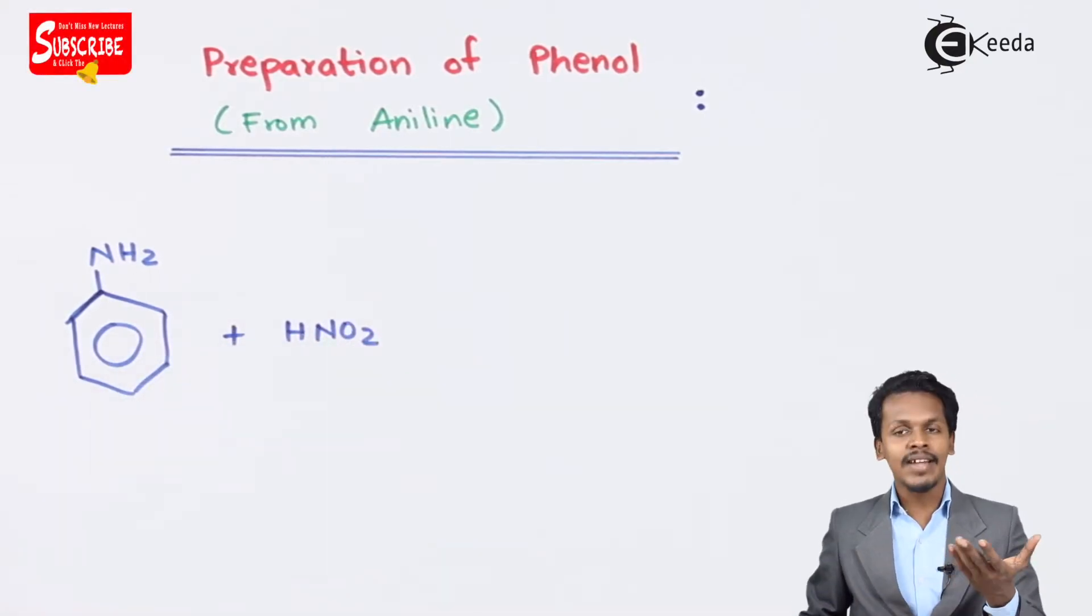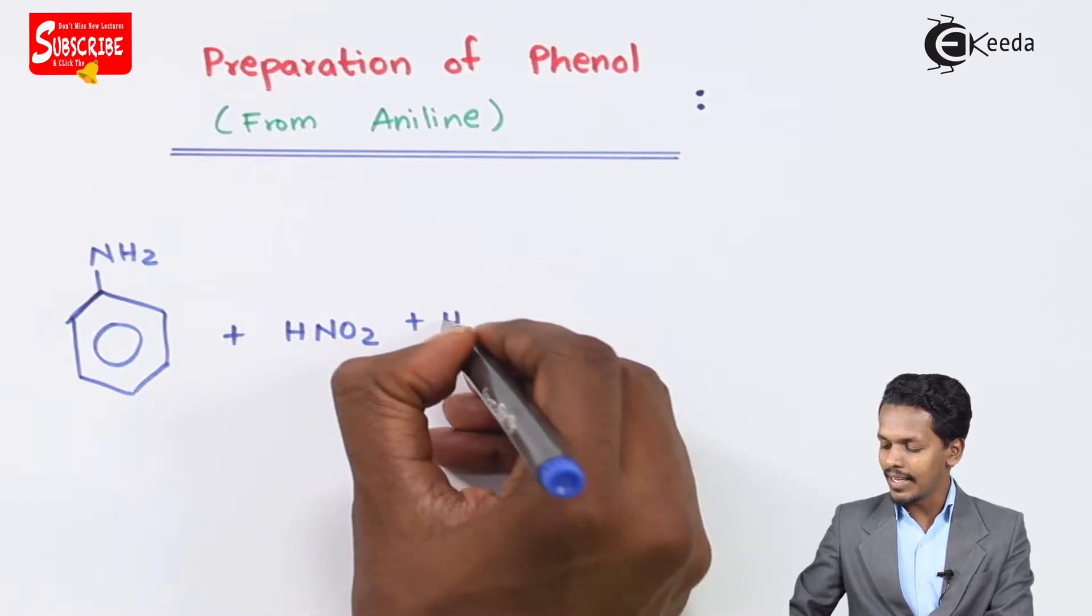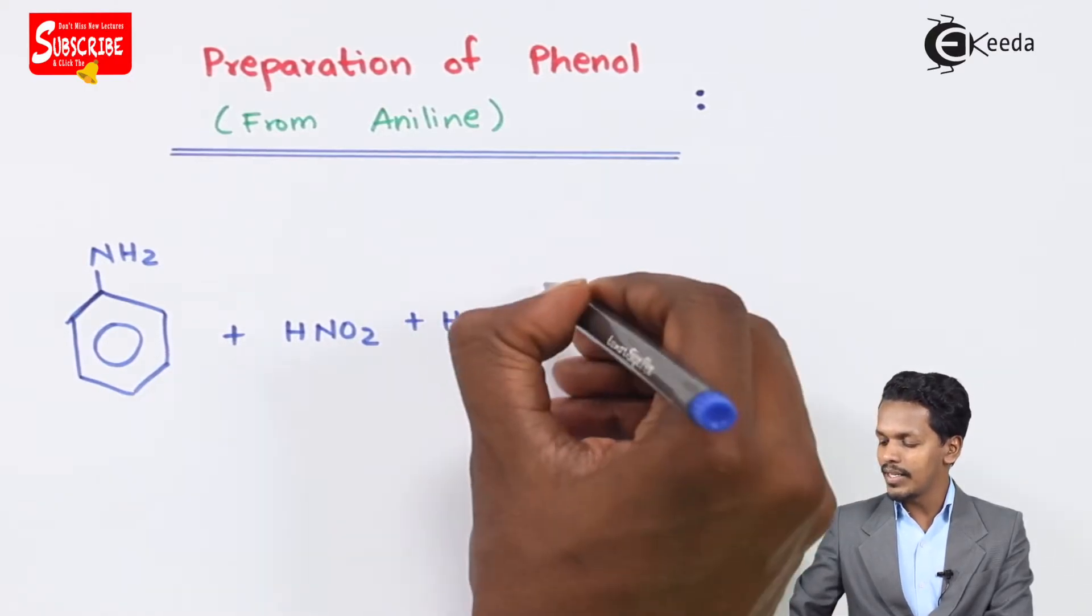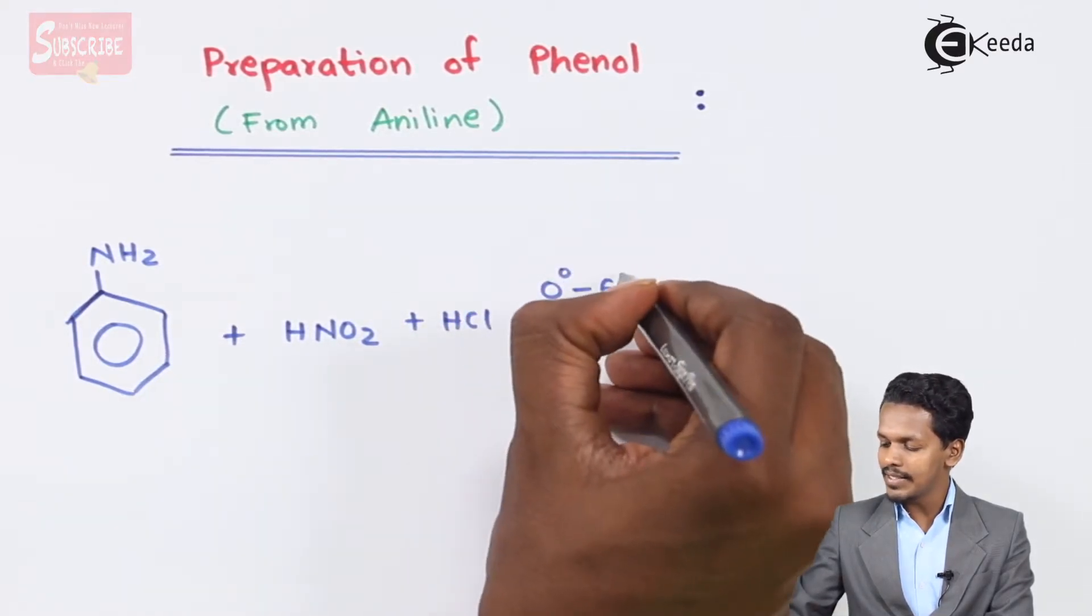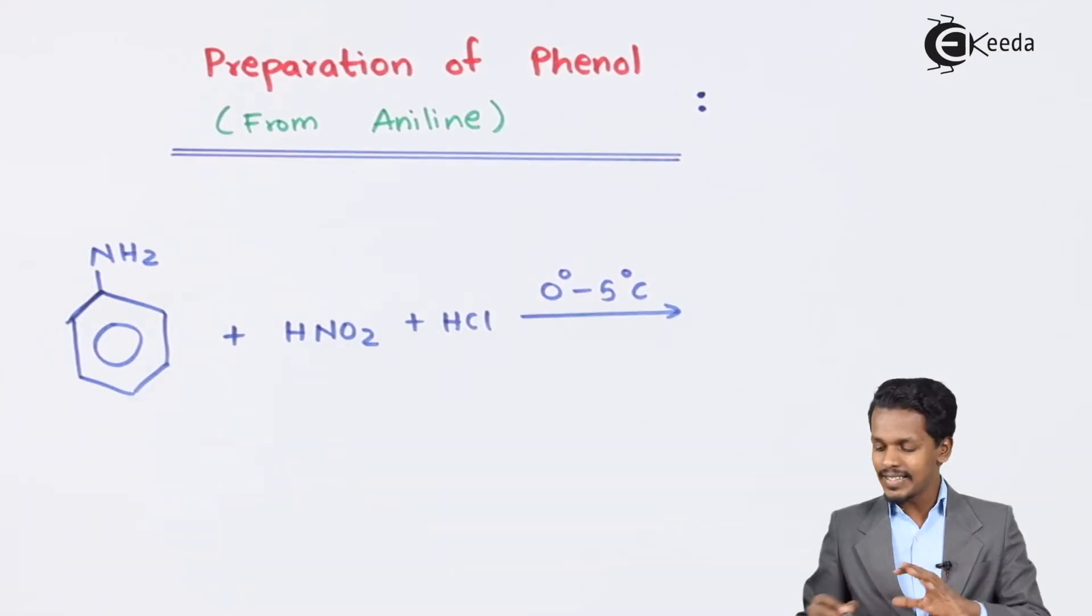At lower temperature, between 0 degree Celsius to 5 degree Celsius. So therefore this process is basically known as diazotization process.